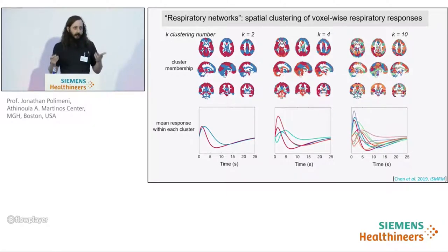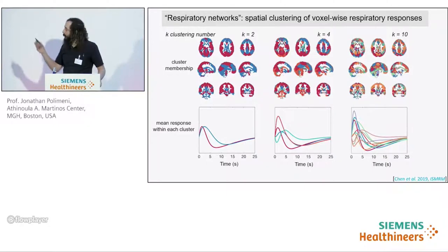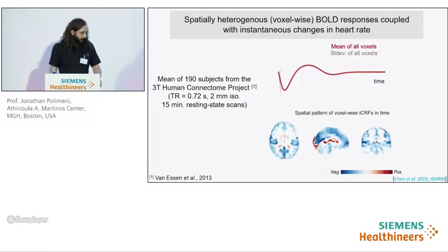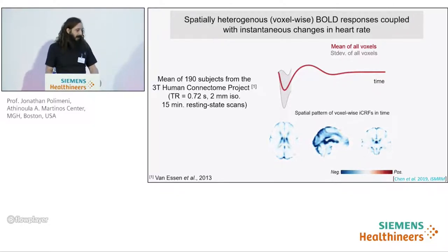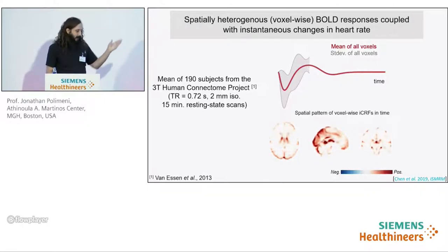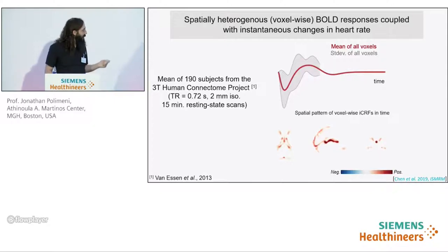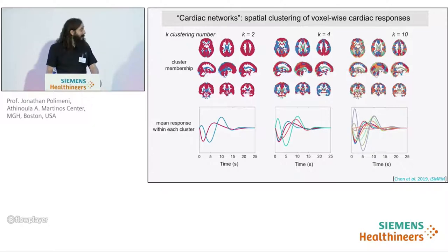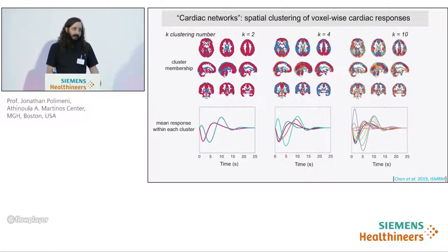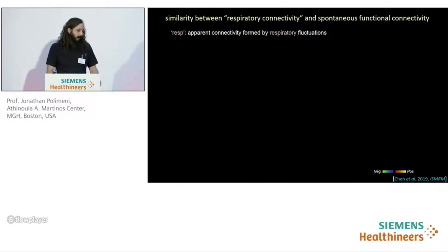This suggests that correlation analyses — which are standard — may detect patterns purely driven by similarities in the respiratory response. We then performed the same deconvolution of slow changes in heart rate to estimate a per-voxel cardiac response function. Again, responses were largely consistent across subjects, showing a spatially varying amplitude and timing of this 4D BOLD cardiac response function across the brain. A data-driven clustering analysis again revealed several clusterings that resemble neuronal networks, which could potentially be mistaken for neural networks in standard functional connectivity analyses.